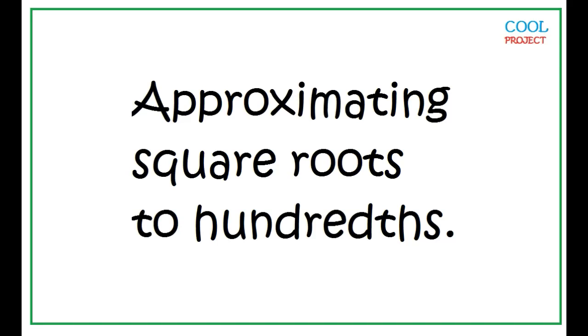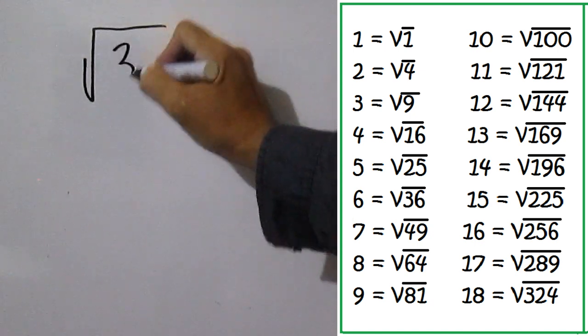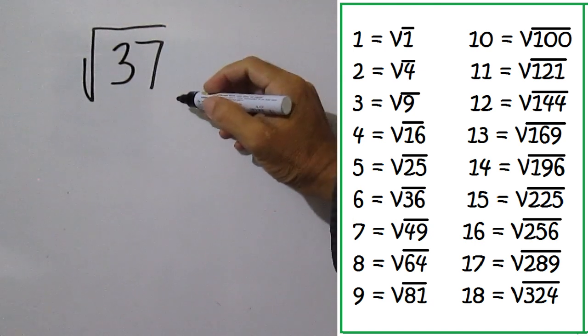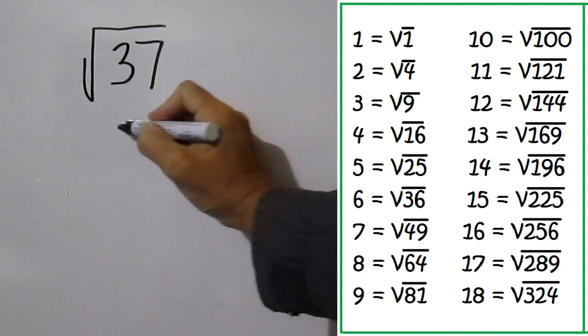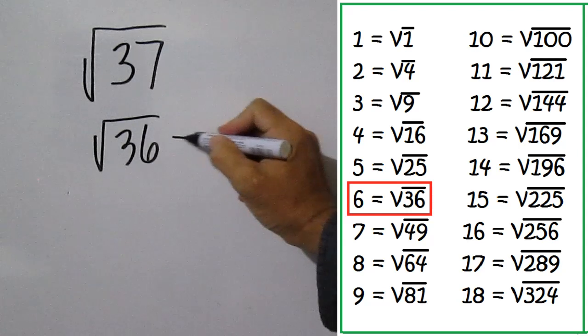Approximating square roots to hundredths. Square root of 37. The closest perfect square less than 37 is 36, and the square root of 36 is 6.